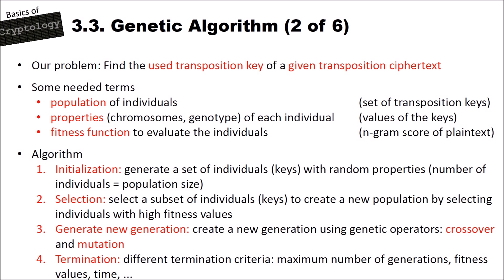The basic genetic algorithm works as follows. In the first step, we have initialization, where we generate a set of individuals with random properties — in our case, transposition keys. The number of individuals equals the population size. The main part consists of steps two, three, and four: selection, where we select individuals with high fitness values; creating a new generation using genetic operators — crossover and mutation; and finally, termination. Termination criteria include the number of generations, the fitness value of the best individual, the time the algorithm has run, and so on.